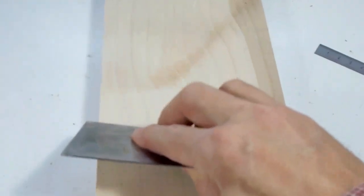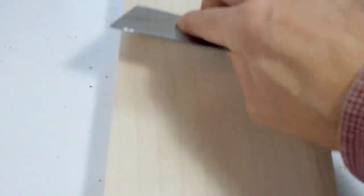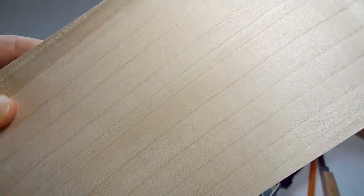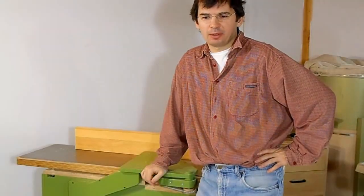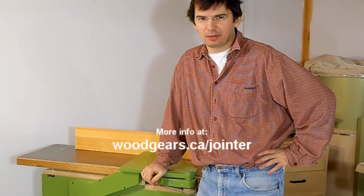I've measured those ridges and they're only about a thou high. Just a few strokes with a cabinet scraper take care of them, but it would still be better not to have them. Well, I guess throwing plywood on the jointer wasn't such a great idea after all.